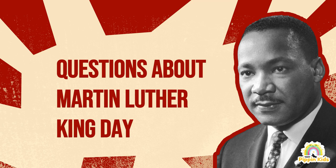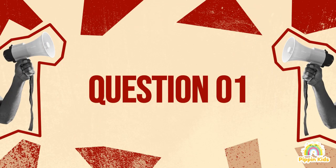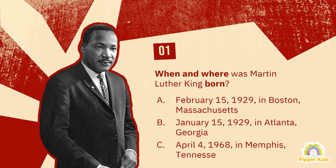Here is the first question: when and where was Martin Luther King born? A) February 15th, 1929 in Boston, Massachusetts. B) January 15th, 1929 in Atlanta, Georgia. C) April 4th, 1968 in Memphis, Tennessee.